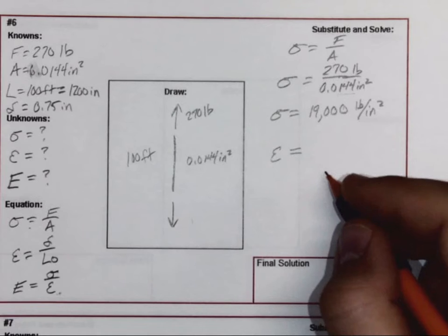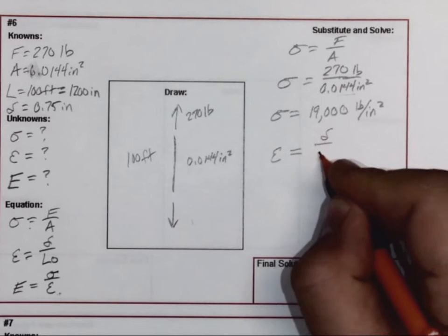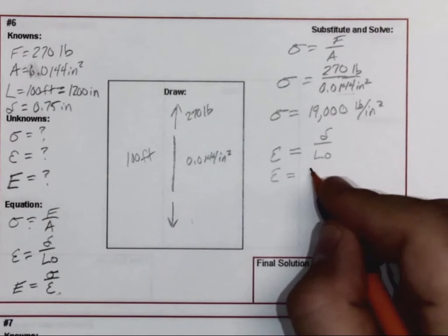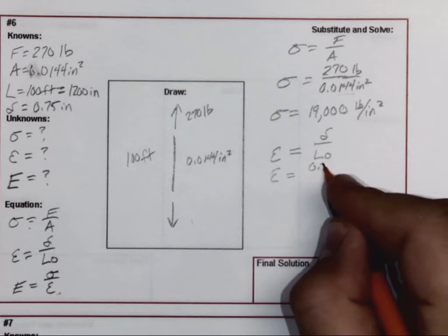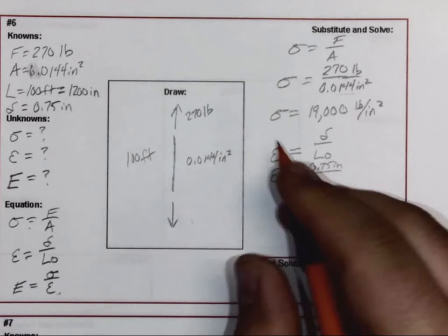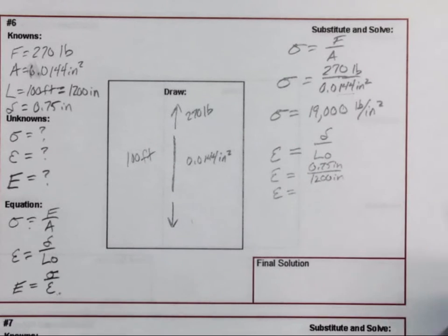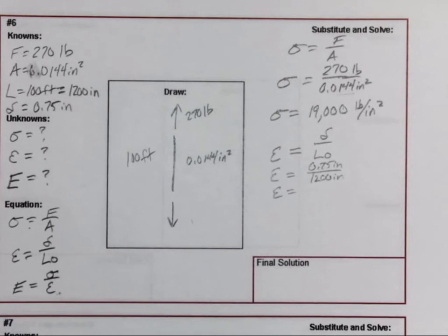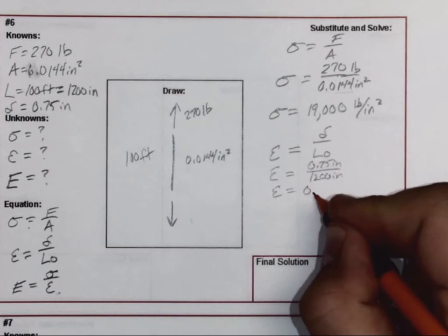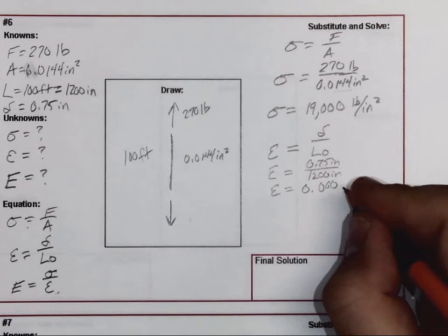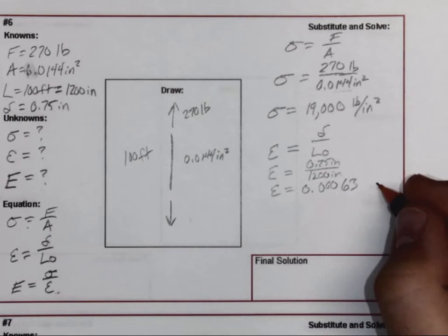The amount of strain, taken by the stretch divided by the original length: strain is equal to the amount of stretch, 0.75 inches, divided by 1200 inches. If you look on your formula sheet, this actually doesn't have any units in it. You're going to end up having 0.0063. You can either leave it unitless or sometimes they'll put it as inch per inch.